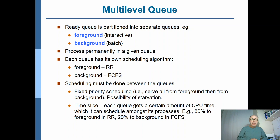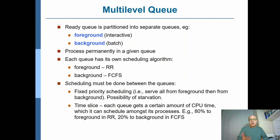You select what type of process it is and put it in the corresponding queue, and it stays in that queue. For each queue, you assign a scheduling algorithm — for example, since you want interactivity for foreground processes, you use round robin scheduling. And since FCFS provides very good CPU utilization, for background processes you can select first come first served.